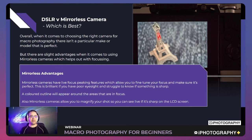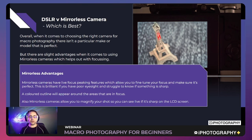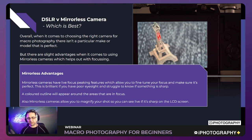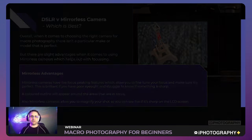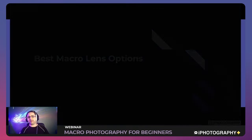If your DSLR has live view magnification, that's another added bonus. On the whole though, don't bog yourself down over whether one camera body is better than another — lenses are where it really counts. Glass quality is what makes the difference, which leads us on to the best macro lens options.